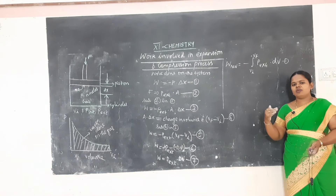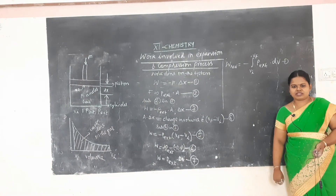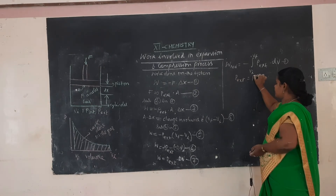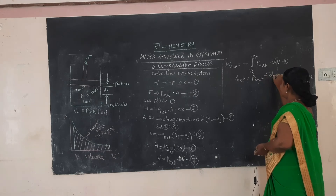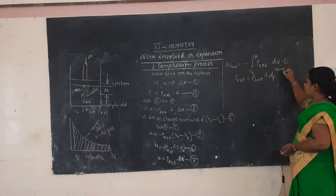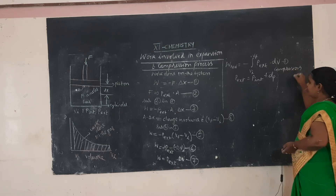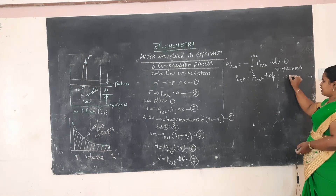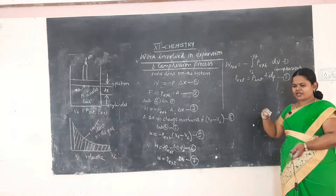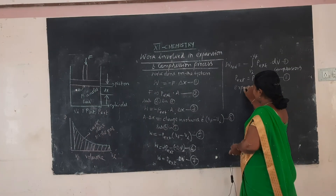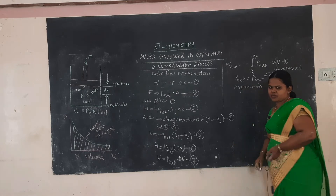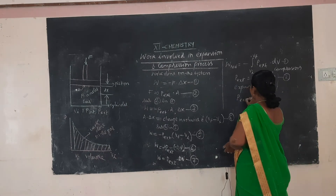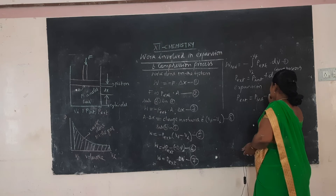During compression, the external pressure will be greater than the pressure of the system. During expansion, the external pressure will be lesser than the pressure of the system, and we write P_ext = P_int - dP — that is the third equation.